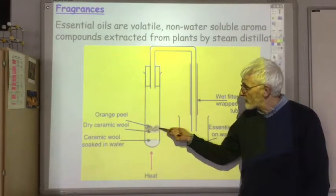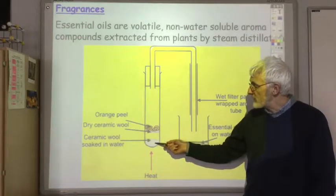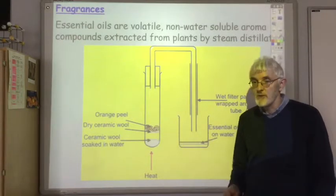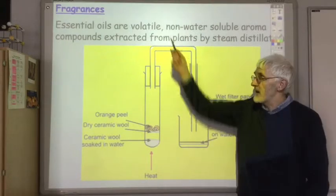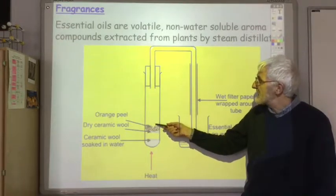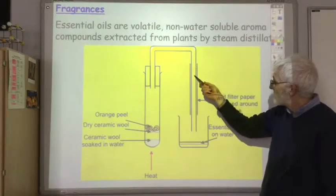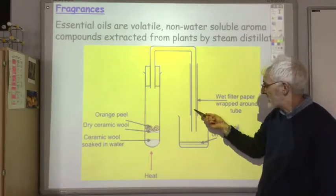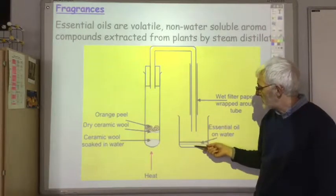In this picture, we're extracting essential oils from orange peel. We heat up some water so it turns into steam, and the steam passes through the orange peel, heating up the compounds in the orange peel. The essential oils are volatile, so they readily evaporate and turn into gas and are carried up through this pipe. When they hit the condenser, the wet paper towel condenser, they cool down and condense back to liquid.